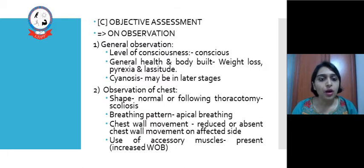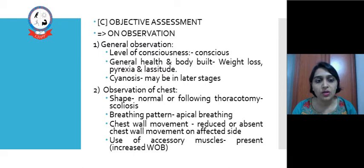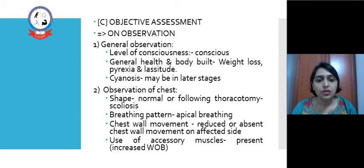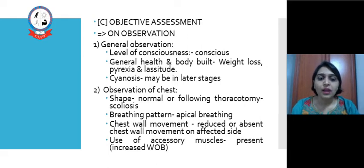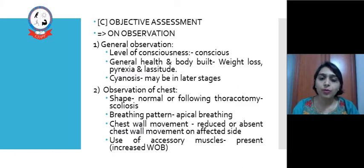Objective assessment includes observation. In general observation, we may find a usually conscious patient whose general health shows weight loss, pyrexia and lassitude. Cyanosis may be present in late stages. Chest shape is normal, or following thoracotomy we may find scoliosis. Breathing pattern may show apical breathing, and chest wall movement is reduced or absent on the affected side. Use of accessory muscles is always present.